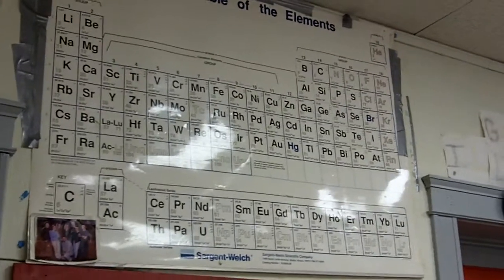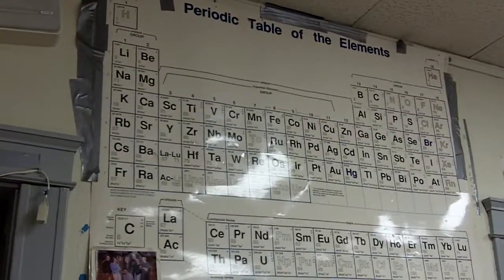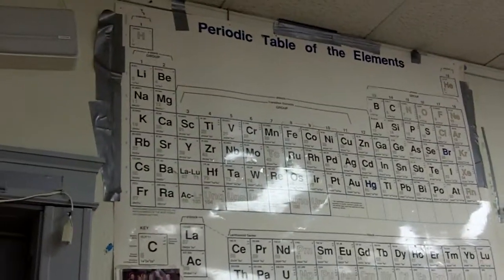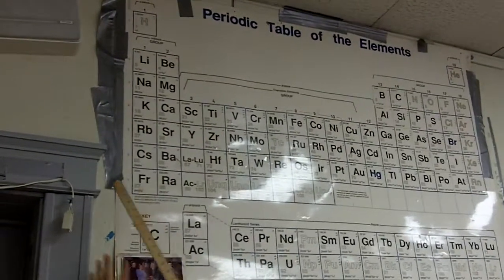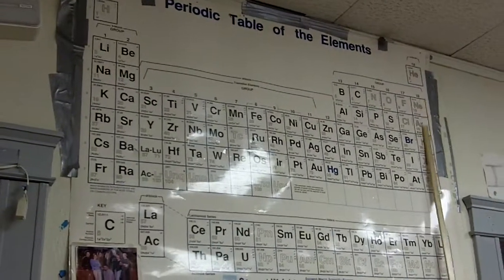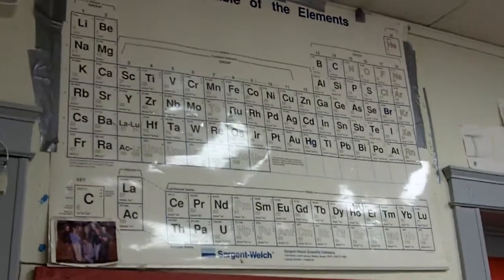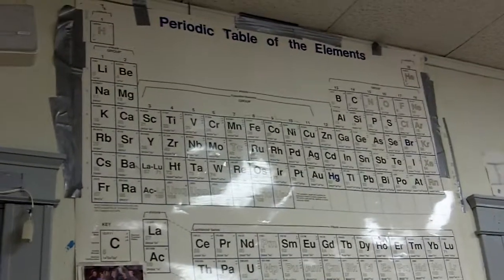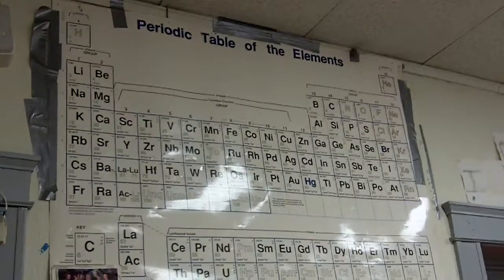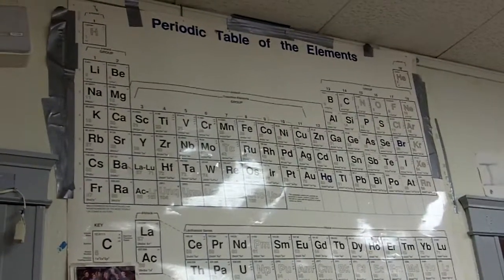We just learned the octet rule — all atoms want to have eight valence electrons. So which of these groups is the happy group? The one at the end — the noble gases, precisely. They're happy. They already are in the best state. They're like the cool kids in school — the awesome ones that everyone either wants to date or wants to be. They're like the captains of the scholastic bowl team.